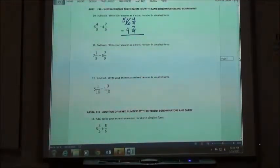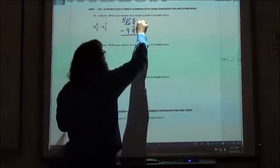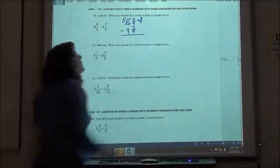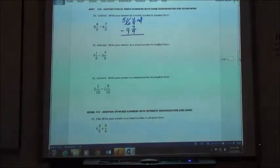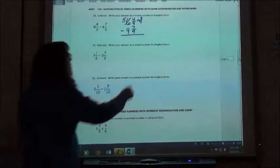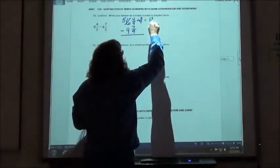1 would be equal to 9 9ths. So when I go over here, when I borrowed my 1, I'm going to add 9 9ths to my 4 9ths. 9 plus 4 would give me 13 9ths.